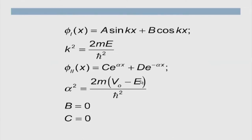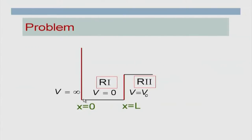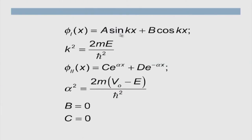Now applying boundary conditions: at x → +∞, the term C e^(αx) blows up, so I set C = 0, leaving only D e^(-αx). Also, at x = 0, since there is an infinite jump in potential energy, I need only match the wave function (not its derivative). The wave function must be 0 at x = 0. Substituting, A sin(0) = 0 and B cos(0) = B, so B must equal 0. Thus only the sine term can be present — the cosine term at x = 0 is not zero, so it is not allowed.